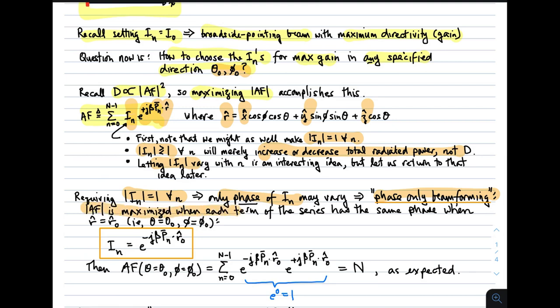The magnitude of the array factor will be maximized when each term of the series which defines the array factor has the same phase. And the phase that we want is the one that corresponds to the pointing direction. So the d_n should be given by this expression, because this will make each term in the series which defines the array factor equal to 1. They'll all add in phase and we'll get the maximum array factor. So this is summarized mathematically here. The array factor will be given by this expression, and each one of the terms in the series will be 1, so that the array factor will be N, and that's the maximum value it can have, again, under the conditions established above.